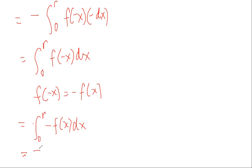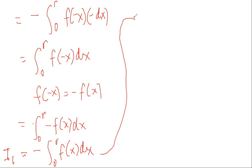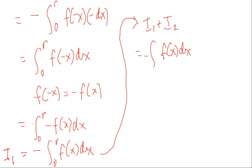So Integral 1 equals negative the integral of f(x) dx from 0 to r. Now let's combine Integral 1 and Integral 2. Integral 1 plus Integral 2 equals negative the integral of f(x) dx from 0 to r, plus the integral of f(x) dx from 0 to r.